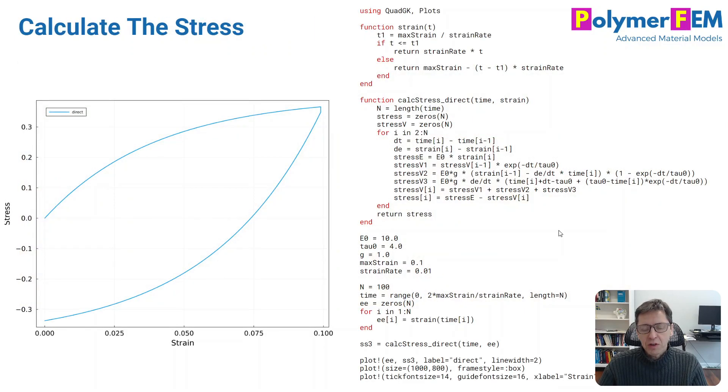So I can code this up. I coded it up in Julia, which is this cool math language that's free, really fast, and available if you're interested. Here's the code. It's a strain function, same as last week. And here's the new calculation of the stress. It takes a time and a strain vector and calculates stress using this equation. And the rest is just plotting the results.